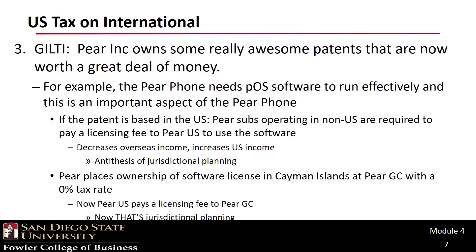Pear Grand Cayman — the CFC of Pear located in and organized under Grand Cayman law — owns the patent to POS. And Pear U.S. can only sell Pear products in the U.S. by paying a licensing fee to Pear Grand Cayman. This does two things: first, it shifts income from Pear U.S. to Pear Grand Cayman; second, it permits the deferral of that income nearly indefinitely. That would have been true under the old system and remains true under the new system. What's amazing is that the only asset Pear Grand Cayman owns is a piece of paper giving them title to the patent — no operations, no employees, and no income other than what is paid by Pear.